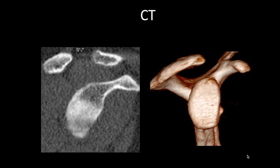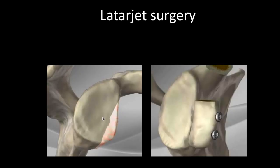This is important to the surgeon because if glenoid bone loss is significant, just reattaching the labrum is not enough. Since the glenoid has lost its normal pear shape, the surgeon needs to perform a Latarjet procedure — usually done as open surgery — where a piece of the coracoid process is attached to the glenoid to restore the pear shape. There is no absolute percentage threshold; the surgeon considers the status of the labrum, capsule, and bone loss together before deciding. Generally more than 20–25% bone loss is considered significant.